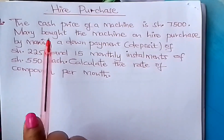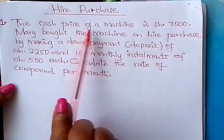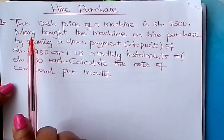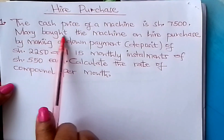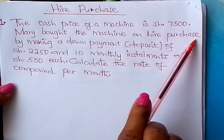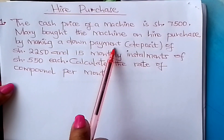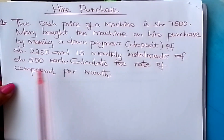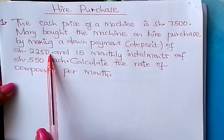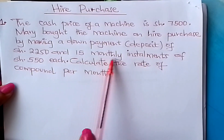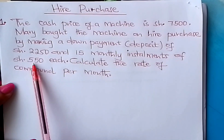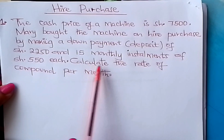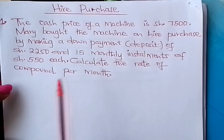Let us look at this question. The cash price of a machine is 7,500 shillings. Mary bought the machine on hire purchase by making a down payment, which is also called a deposit, of 2,250 shillings and 15 monthly installments of 550 shillings each. The question is: calculate the rate of compound interest per month.